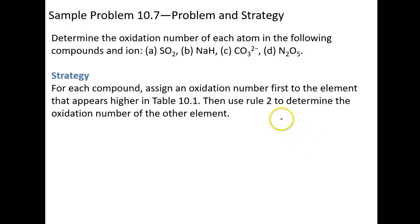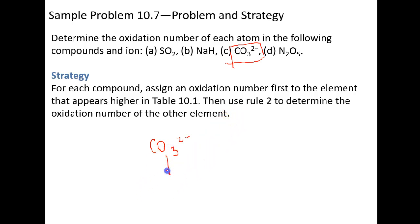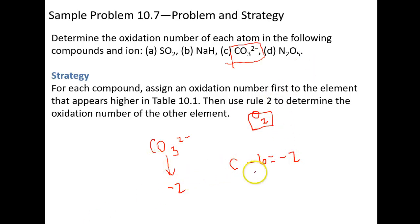Here's a practice problem: CO₃²⁻. Pause and figure out the oxidation states of both atoms, then come back. The oxygen is easy — minus two, since it's not elemental. Carbon plus three oxygens at minus two each: carbon minus six equals minus two, so carbon has a positive four oxidation state. You can work on the other three practice problems as additional practice.